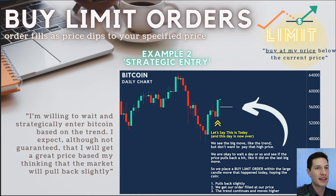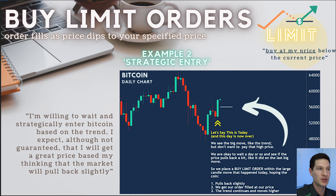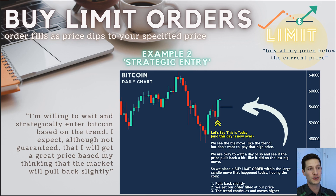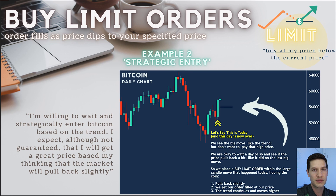The second type of limit order is a more strategic entry. You're willing to wait and strategically enter Bitcoin maybe a day, two, or three days later. You're trying to take advantage of the trend while also getting a better price than the current market price is showing you.